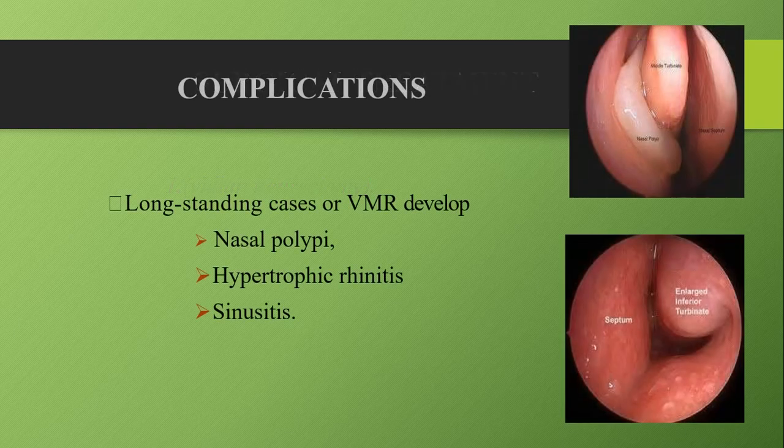This brings us to the end of the main topic of vasomotor rhinitis, but we must also discuss the complications. In long-standing cases, patients can develop nasal polyps, hypertrophic rhinitis, and sinusitis. As seen in this picture, the turbinates are enlarged compared to a normal turbinate — in a patient with long-standing vasomotor rhinitis, the turbinates can enlarge significantly.